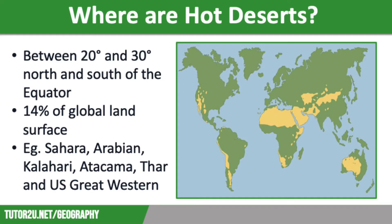We are going to start off by talking about where the hot desert biome is located. Hot deserts are found between 20 and 30 degrees north and south of the equator. They cover approximately 14% of the global land surface. The largest hot desert in the world is the Sahara Desert in northern Africa, covering around 9 million square kilometres.